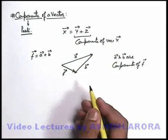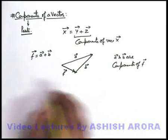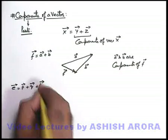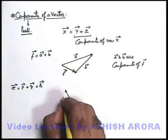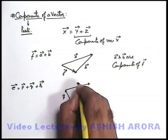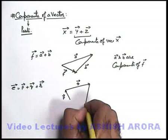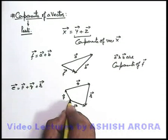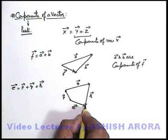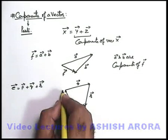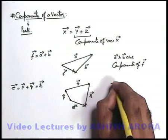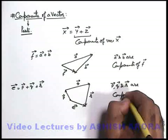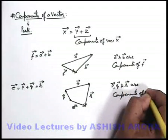Similarly, a vector can have more than two vector components. Like, say p vector is equal to p vector plus q vector plus r vector. These are drawn like: this is p vector, this is q vector, and this is r vector. So here the resultant e vector goes from the starting point of the first vector to the end point of the last vector. So e vector can be written as p plus q plus r vector. So p vector, q vector, and r vector are components of e vector.